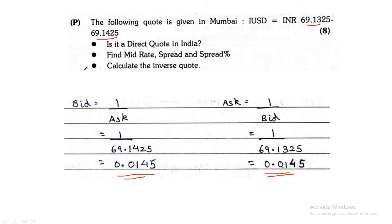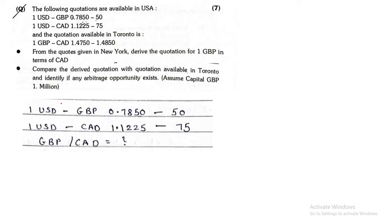Now the next one was question number 2Q. The following quotations are available in USA: 1 USD to GBP and 1 USD to CAD. They are giving you something of Toronto. From the given quotes in USA, derive quotations for 1 GBP in terms of CAD. So you have to find GBP to CAD, which is basically a cross rate. 1 USD to GBP is given, 1 USD to CAD is given, and they're asking us to find GBP to CAD.